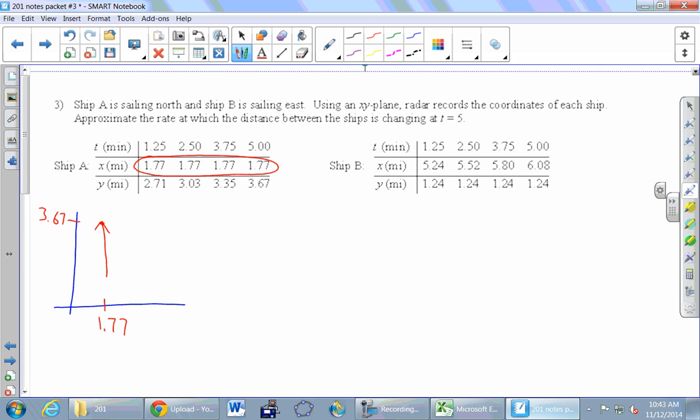And then the other table, what's constant, is the Y, which is 1.24. So I'll put a Y at 1.24. And what's happening to the Xs as time passes? They're getting bigger, which means this ship is heading which way? East, which is also what Isaac read.